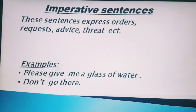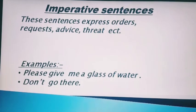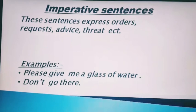Example se samjhte hain. 'Please give me a glass of water' — aapko kis type of sentence lag raha hai? 'Please' aa raha hai ismein, to yeh request lag rahi hai — it's an imperative sentence. Second one: 'Don't go there' — kya ho raha hai ismein? Order diya ja raha hai na? 'Wahaan mat jao.' To yeh bhi imperative sentence hai.